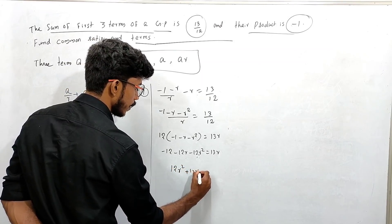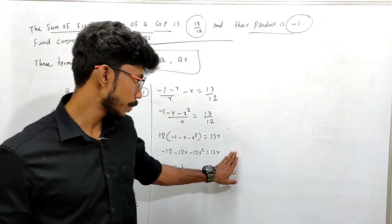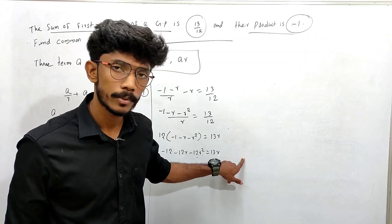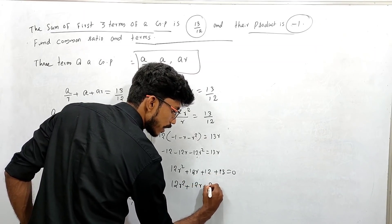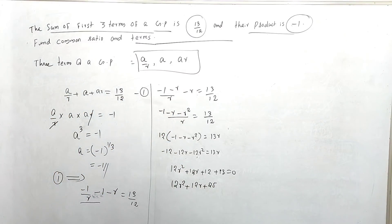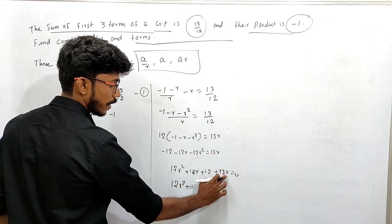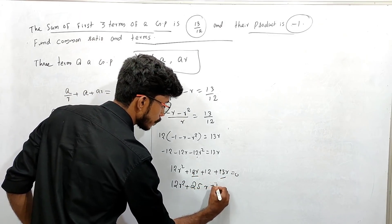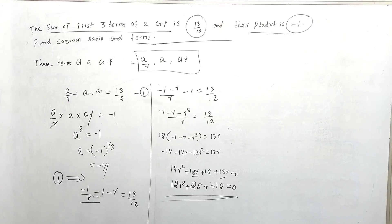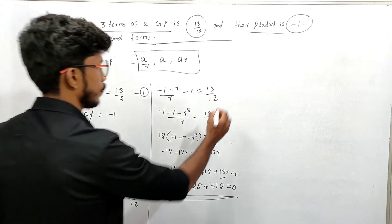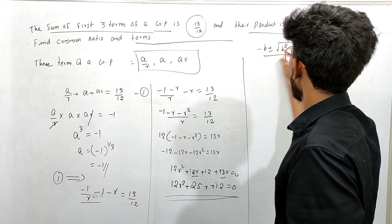Rearranging: 12R squared plus 25R plus 12 equals 0. This is a quadratic equation. We need to solve this quadratic equation using the formula: R equals minus b plus or minus root of b squared minus 4ac, all divided by 2a.